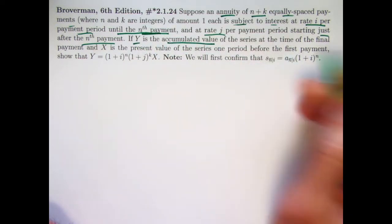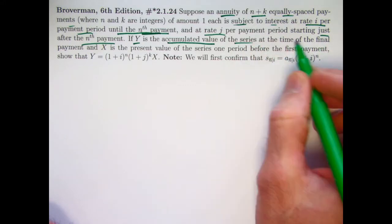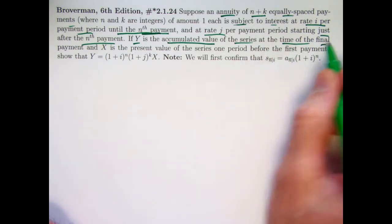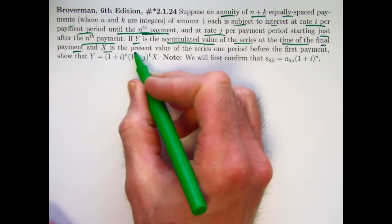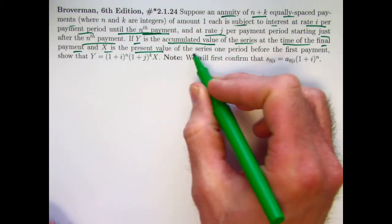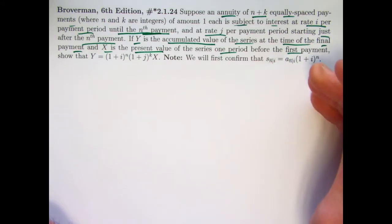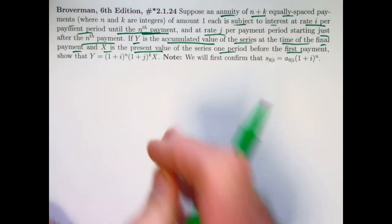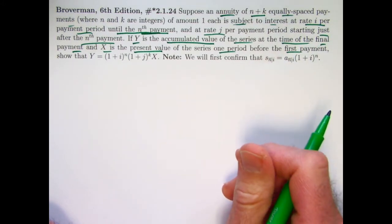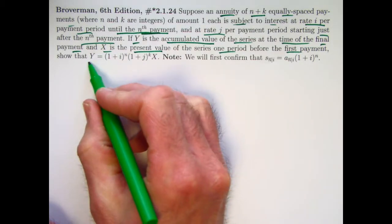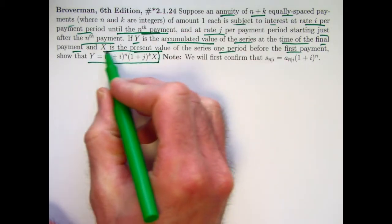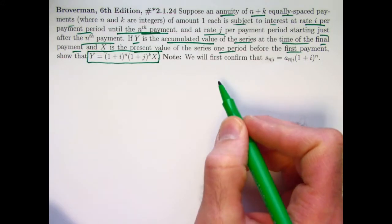If Y is the accumulated value of this series at the time right after the final payment, and X is the present value of the series one period before the first payment, so it's really like an annuity immediate, the present value is evaluated one period before.